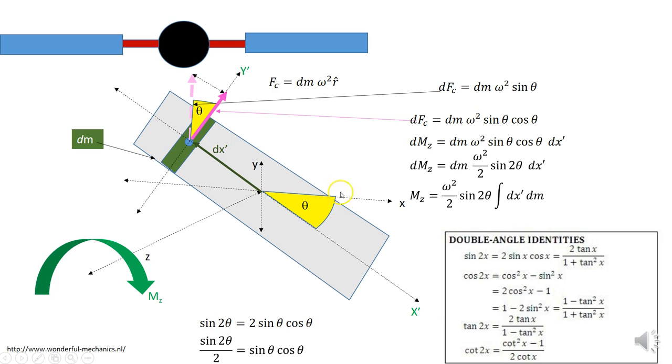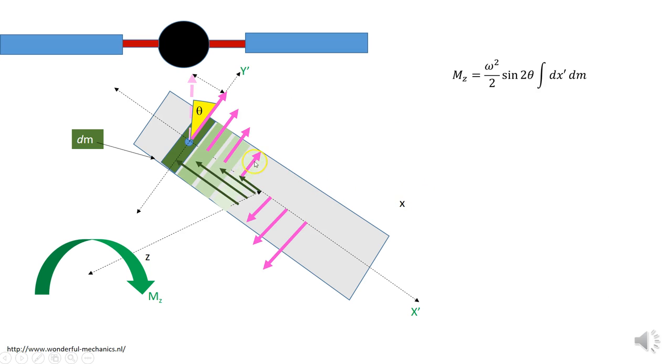So what that's telling me is this total moment is made up of individual moments from different parts of this flat plate. And they would be going in this direction on one side of the plate and in this direction on the other side. About the axis.